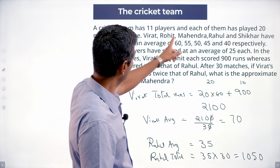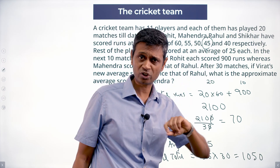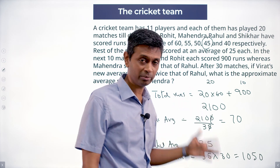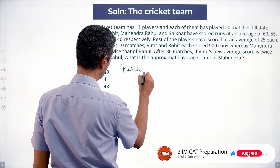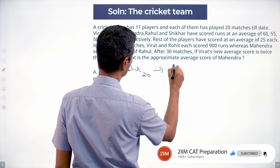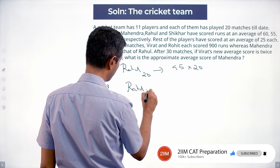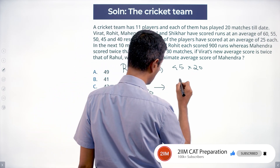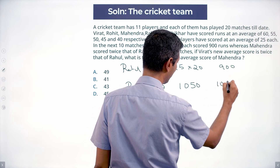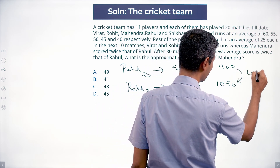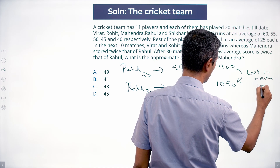Rahul has an original average of 45 for 20 matches, and his new average is 35 after 30 matches. Rahul at the end of 20 matches has scored 45 × 20 = 900. Rahul at the end of 30 matches has scored 1050. So in the last 10 matches, Rahul has scored 150.